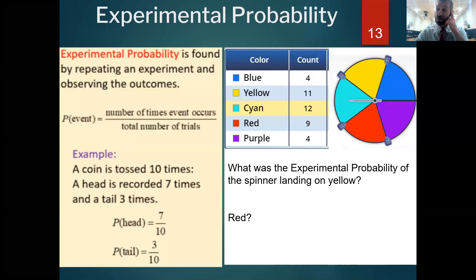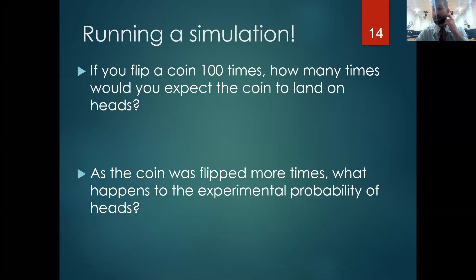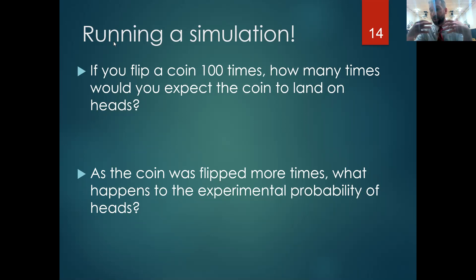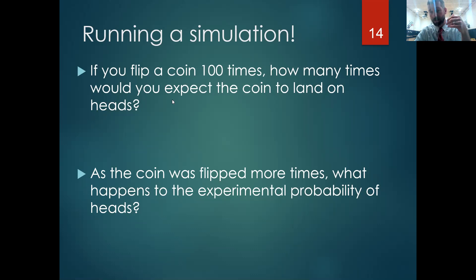We can extrapolate experimental results across many experiments to see what happens. Essentially, we're going to be running a simulation today — computer software that mimics probability and how it behaves — so that we don't have to sit here and flip a coin a hundred times or roll a dice a thousand times. We can speed up that process and see what happens.